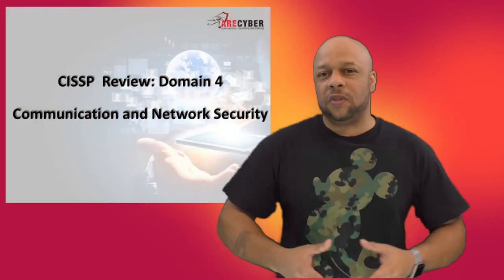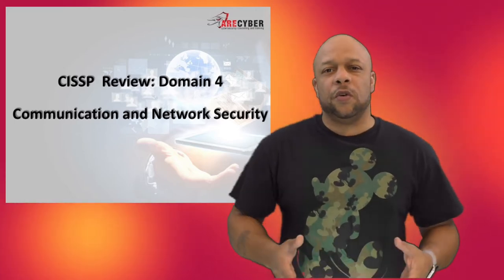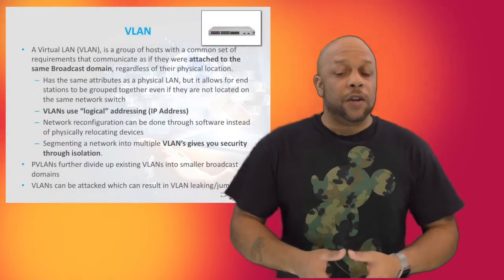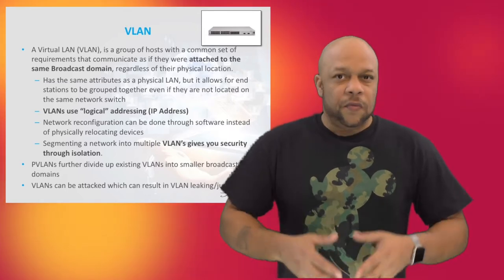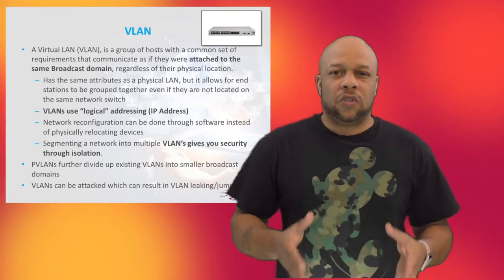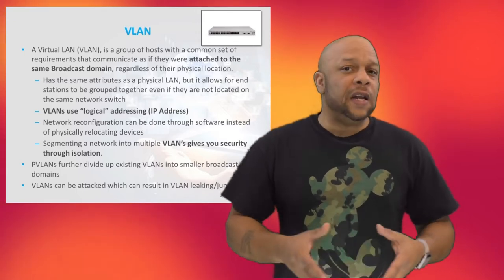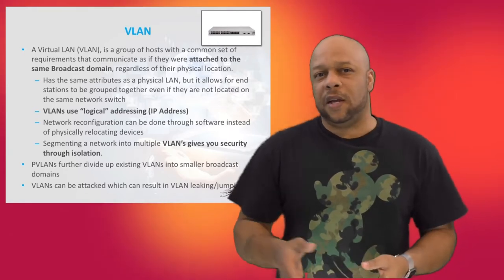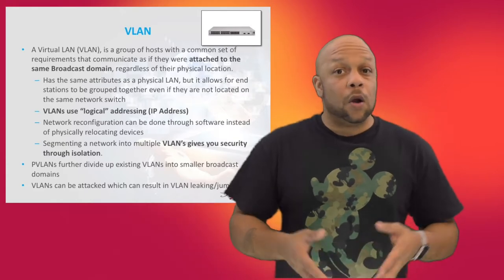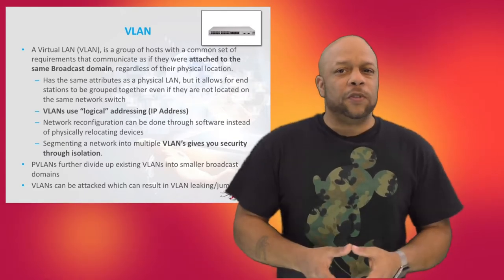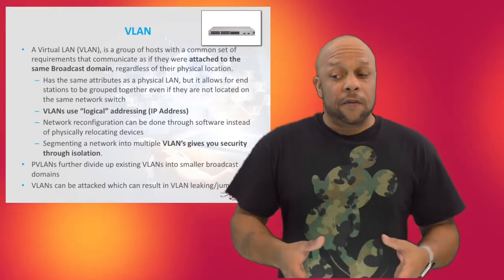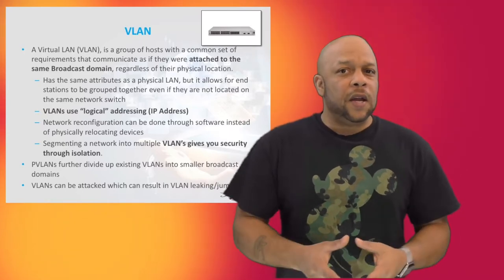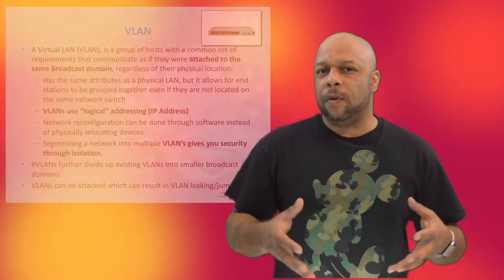We're carrying on through the CISSP. We are on Domain 4, Network Security and Communications. We left off with VLANs. They are on the switch at Layer 2 and break up the broadcast domain into several collision domains. VLANs are especially helpful when you need to isolate traffic — for instance, separating HR from IT, or putting executives in their own individual VLAN. This also helps with troubleshooting: you can identify a problem in a particular VLAN rather than dealing with one large flat network.